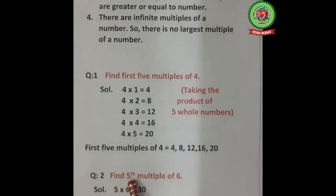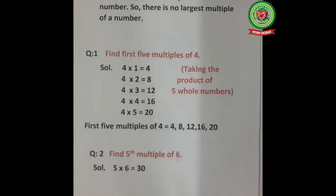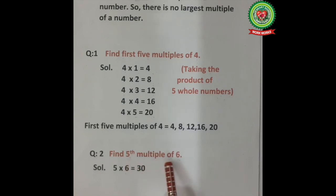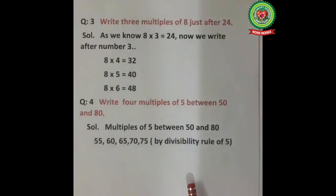Type 2: find the 5th multiple of 6. When a particular multiple position is given for any number, we multiply that position number with the given number: 5 multiply 6 is equal to 30.